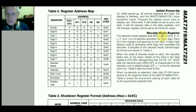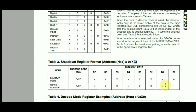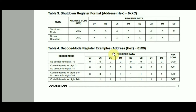The shutdown register is at hex 0x0C. It has two values: zero in bit zero means shutdown mode, and one in bit zero means normal operation. The don't-care bits are filled with zeros by convention. For decode mode, to enable BCD decoding for all eight digits (seven through zero), we send 0xFF — that tells the chip to use the special decoding mechanism for every digit.